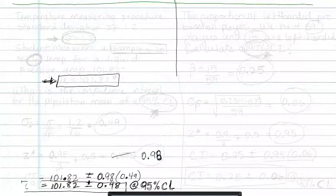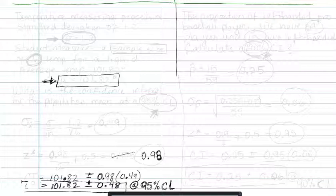An example of when you use the mean sampling distribution confidence interval equations and when you use the proportion confidence interval equations.